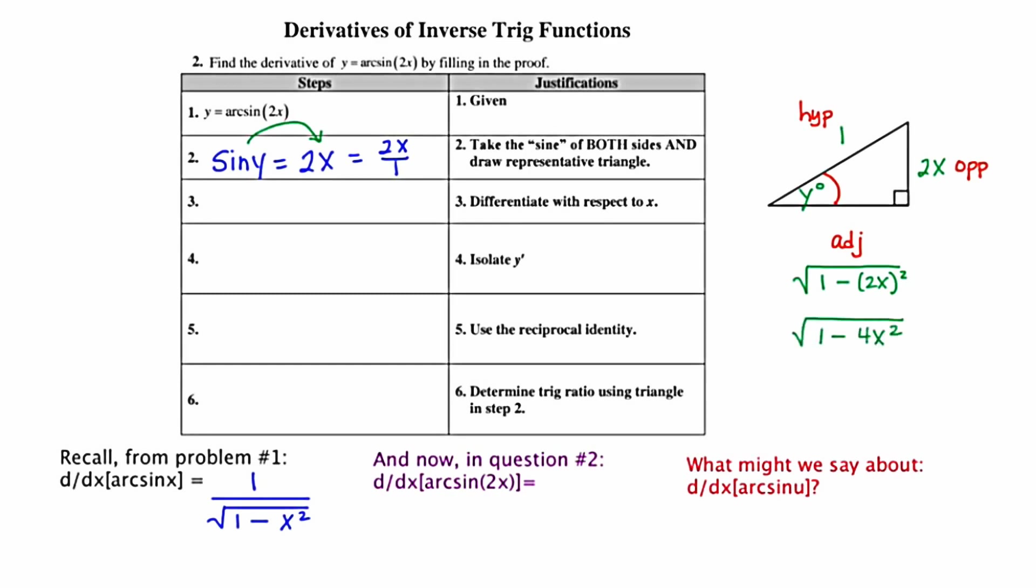In step 3, we're instructed to differentiate with respect to x. If I differentiate sine y with respect to x, I get cosine y times dy dx, or cosine y times y prime. Differentiating 2x with respect to x leaves us with just 2.